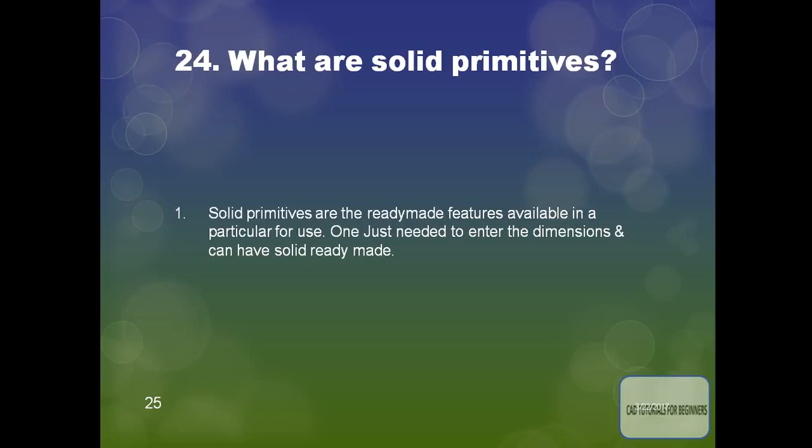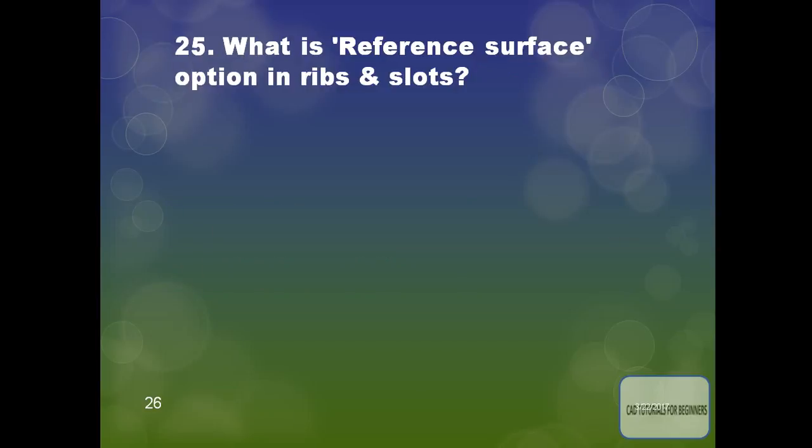What are solid primitives? Solid primitives are ready-made features available in CATIA. One just needs to enter the dimensions and can have a solid ready-made. Examples include cylinder, cone, sphere, and block. For a block you just need to provide length and width; for a cylinder you provide the diameter, axis, and height.